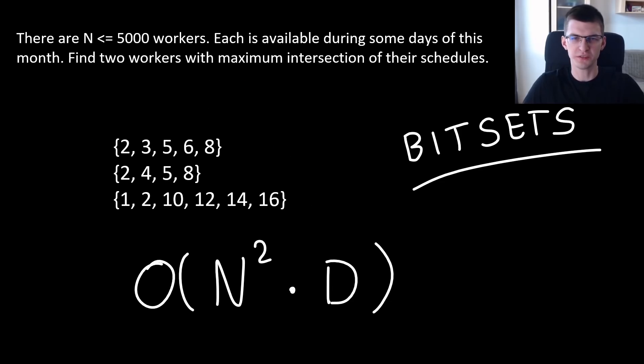If you watched the first lecture, you should already know that a subset of some set of numbers from 1 to 30 can be represented as a binary number of length 30. This schedule with 2, 3, 5 and so on, I can represent as a binary number 0, 1, 1 and so on. Where 0 means I'm not available on the first day of a month, then 2nd yes, 3rd yes, 4th, 5th, 6th, 7th, 8th and then a lot of 0s till the 30th day.